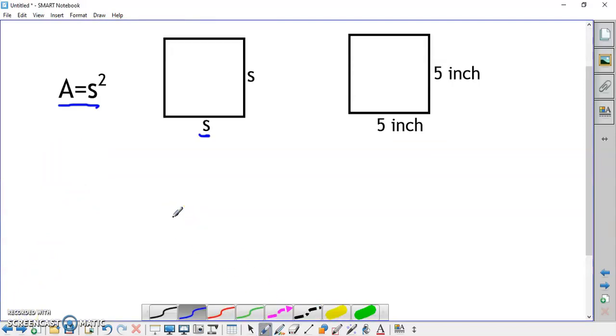For this square, the side length is 5 inches. The area would be 5 inches times 5 inches. So, the area is 25 inches squared.